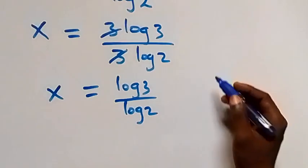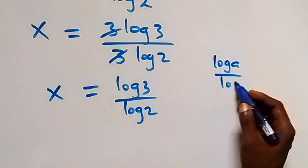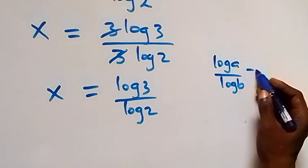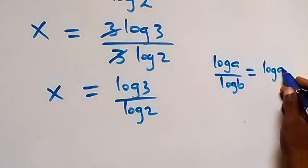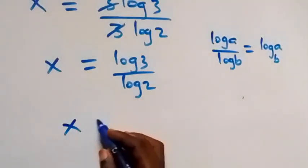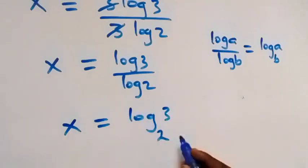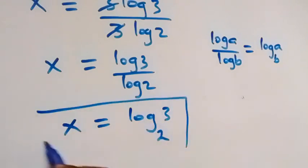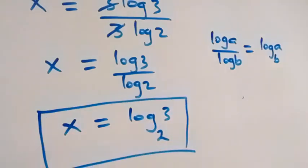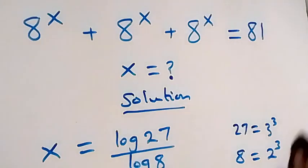Applying the change of base formula — log a over log b equals log a to base b — what we have becomes x equals log 3 to base 2. So here we have the solution to this given problem: x equals log 3 to base 2.